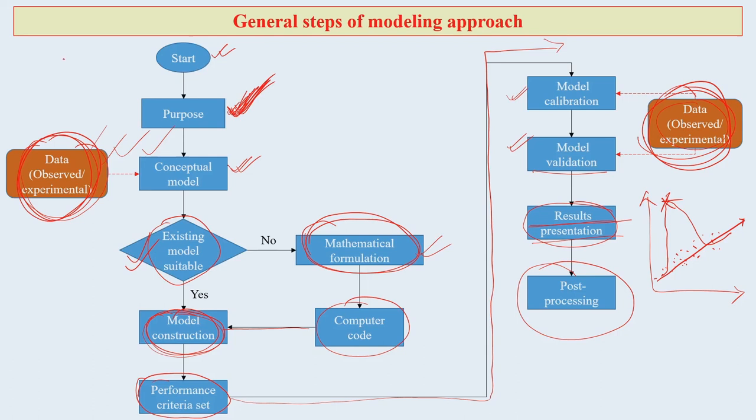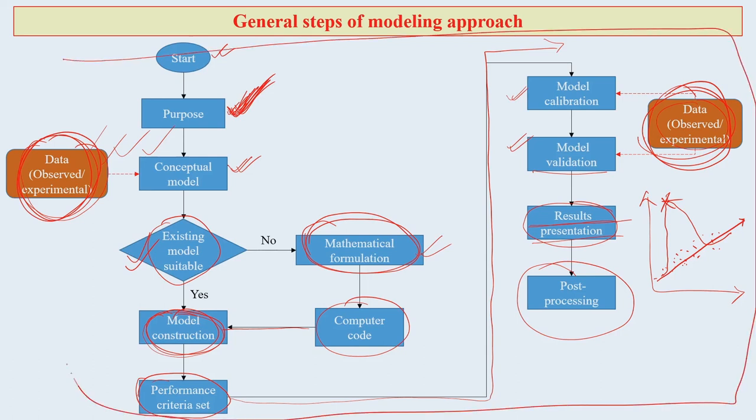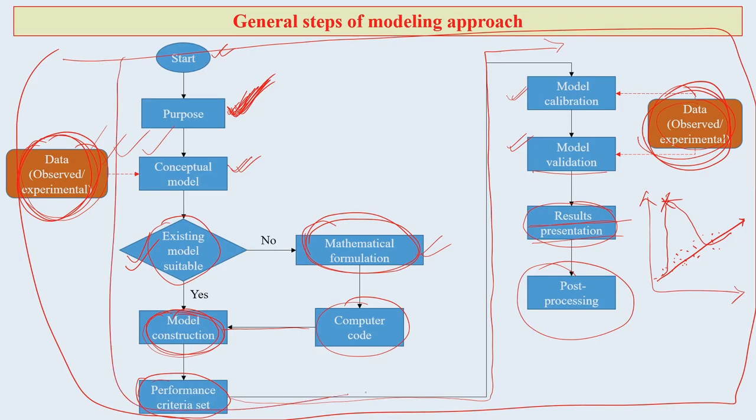This is the general setup for modeling - for any model, this is the general structure. For any particular model there could be one or two additional functions: crop modeling will have crop parameters, water modeling will have water parameters, erosion models will have other parameters. On the basis of your purpose, model to model there will be some other formulations built into those models, but the basic structure as discussed remains the same.